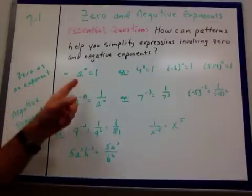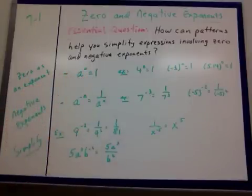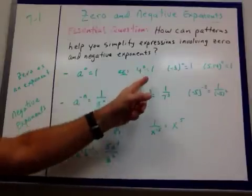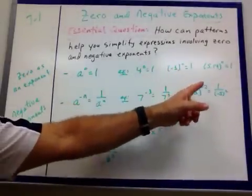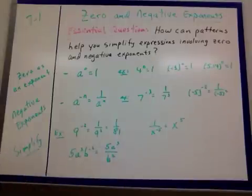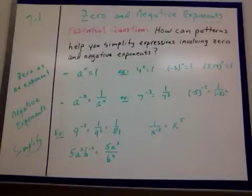Let's look at what we mean by zero and negative exponents. When you take zero as an exponent, like a to the 0, it's always going to equal 1. Any number - 4 to the 0, negative 3 to the 0, 5.14 to the 0 - they all equal 1. Any number to the 0 power is 1. Period. That's it. No ifs, ands, or buts about it.